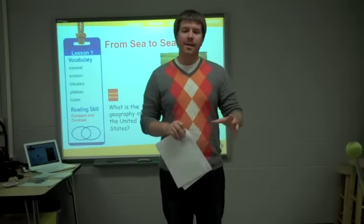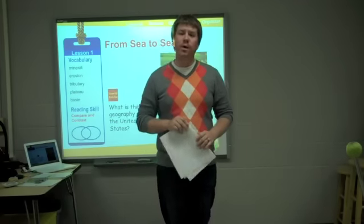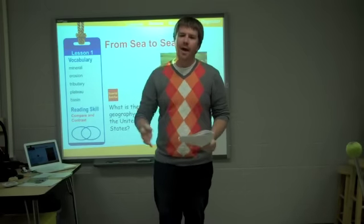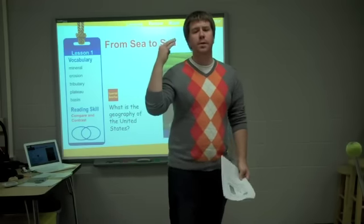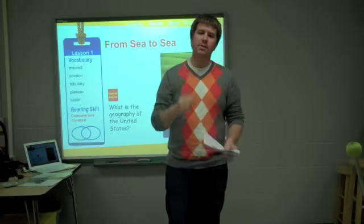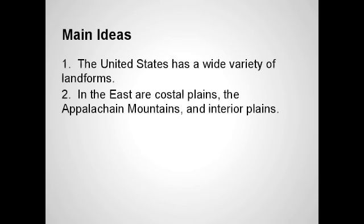The United States is over 3,000 miles from coast to coast — it's a really wide country, and there's a lot of things happening in it. Today I want you to identify four things. First, the United States has a wide variety of landforms, waterways, and resources. Second, we're going to divide the country in half and talk about the eastern part, which includes the coastal plains, the Appalachian Mountains, and the interior plains.